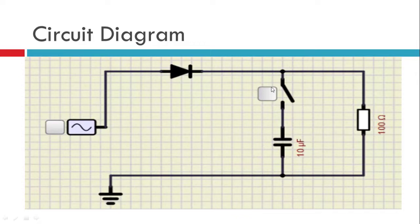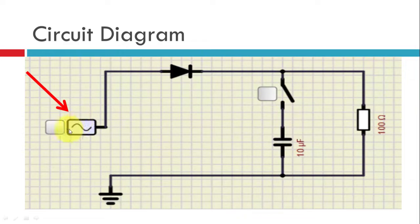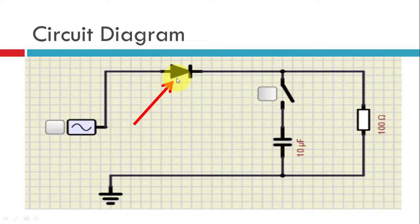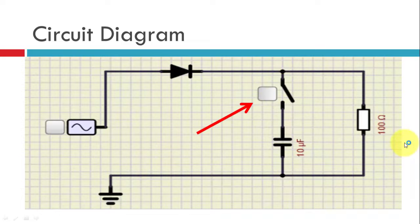This is the circuit diagram we will be using. Let us see the components. The first component is the AC input — it provides the AC input. Then this is the diode which does the rectification, the rectifying action. Then here we have the switch.